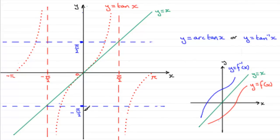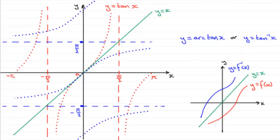So when we reflect the graph y equals tan x in y equals x, this is what we get — something like that. It's looking a bit overcrowded at the moment but it will slim down in a moment.